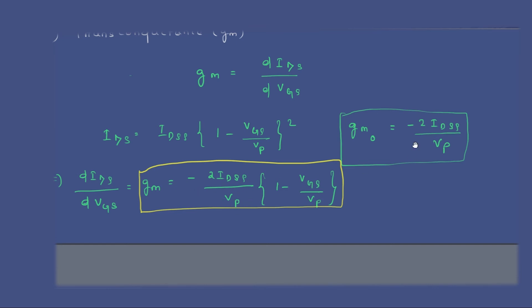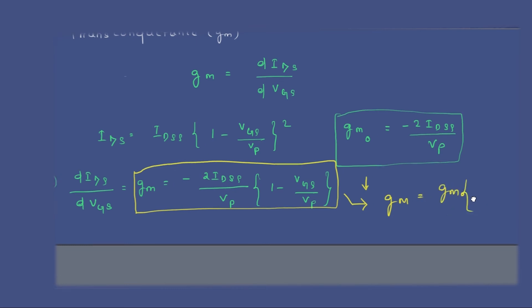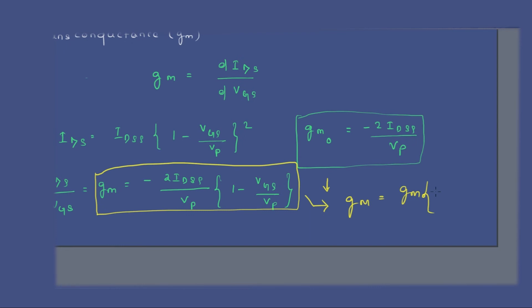From this equation, gm can also be written as: gm = gm0 × (1 − VGS/VP). This is a very important formula.